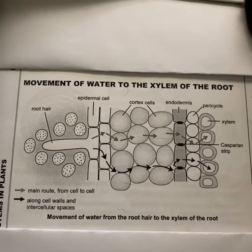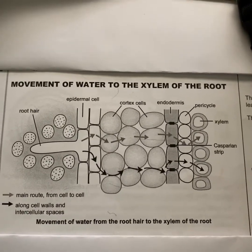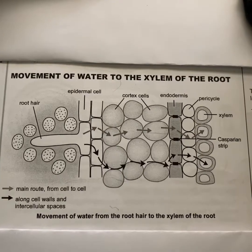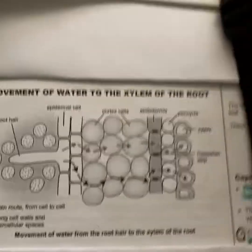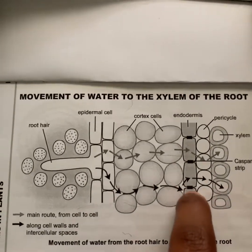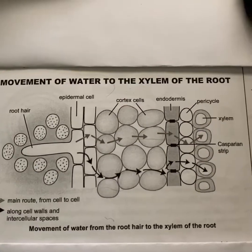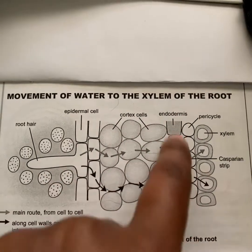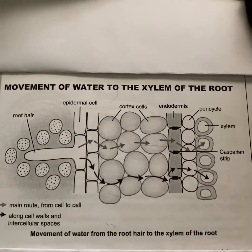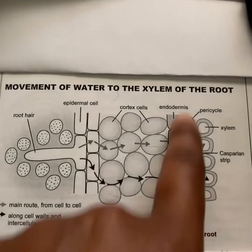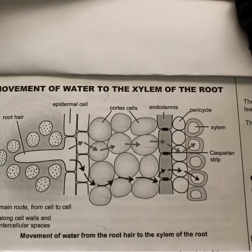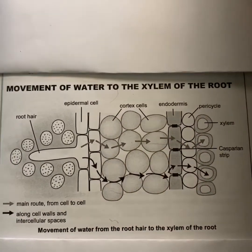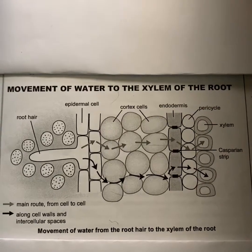When the first route — the cell-by-cell route — reaches the endodermis, it cannot pass through the cell walls due to the presence of Casparian strips. These prevent the water from passing through, so it then passes through the passage cells of the endodermis, then goes to the pericycle, and then reaches the root xylem. The Casparian strips are made of cork, which is why water cannot move through them.